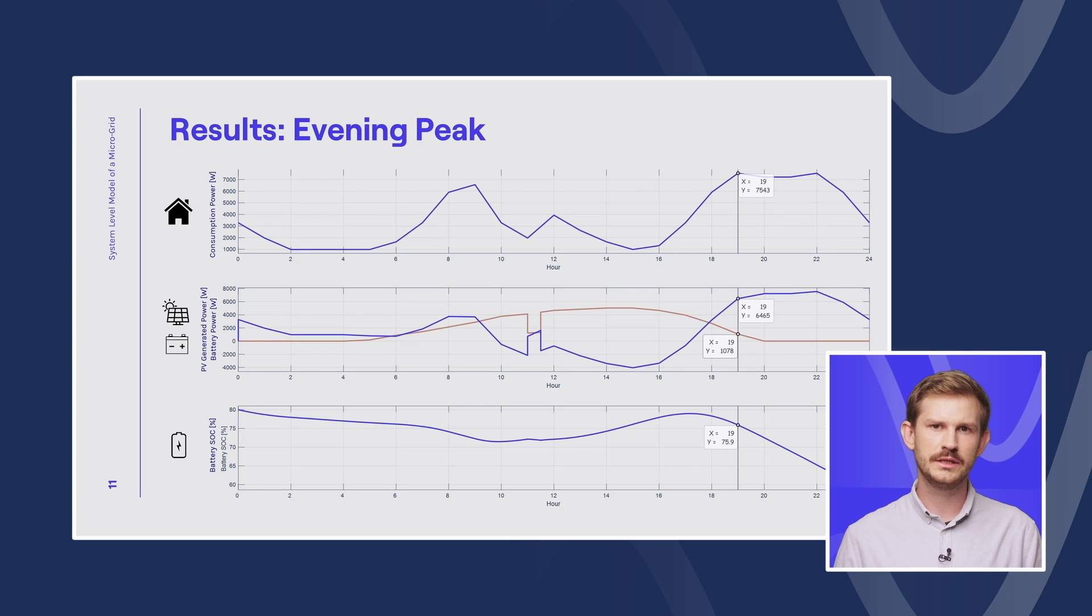And as the shading is gone, you can see that in the afternoon hours the solar panel generates surplus power and we use this extra power to charge our battery. And later during the night consumption peak, we are using the power stored in the battery to cover the household needs again. From these results, we can conclude that our component sizing was appropriate and we are able to cover the power needs of the household during a typical day.